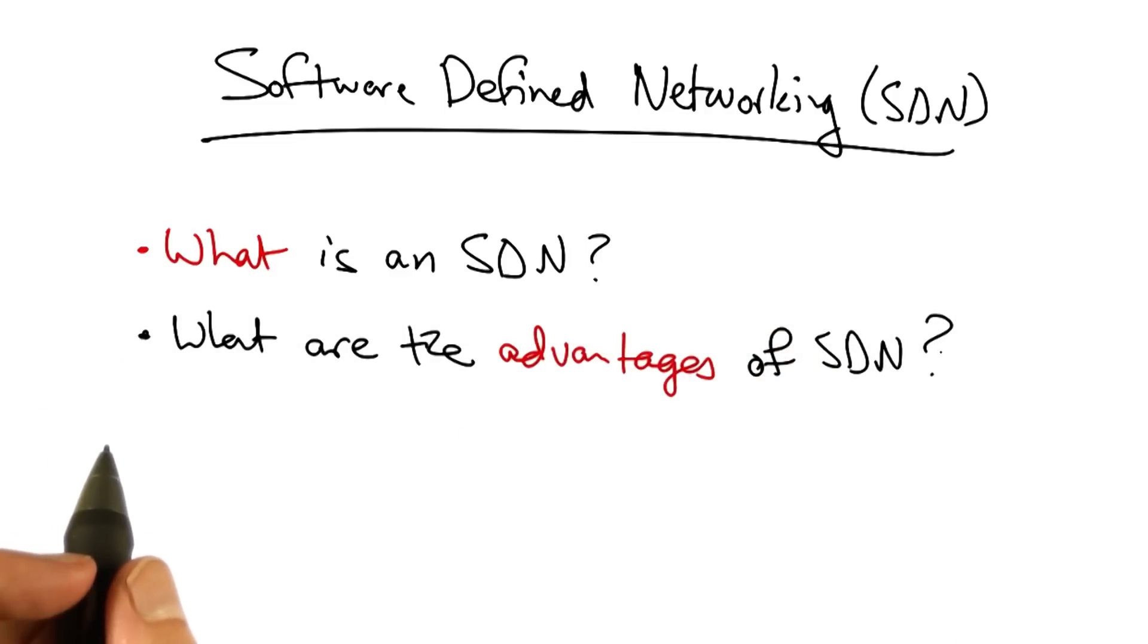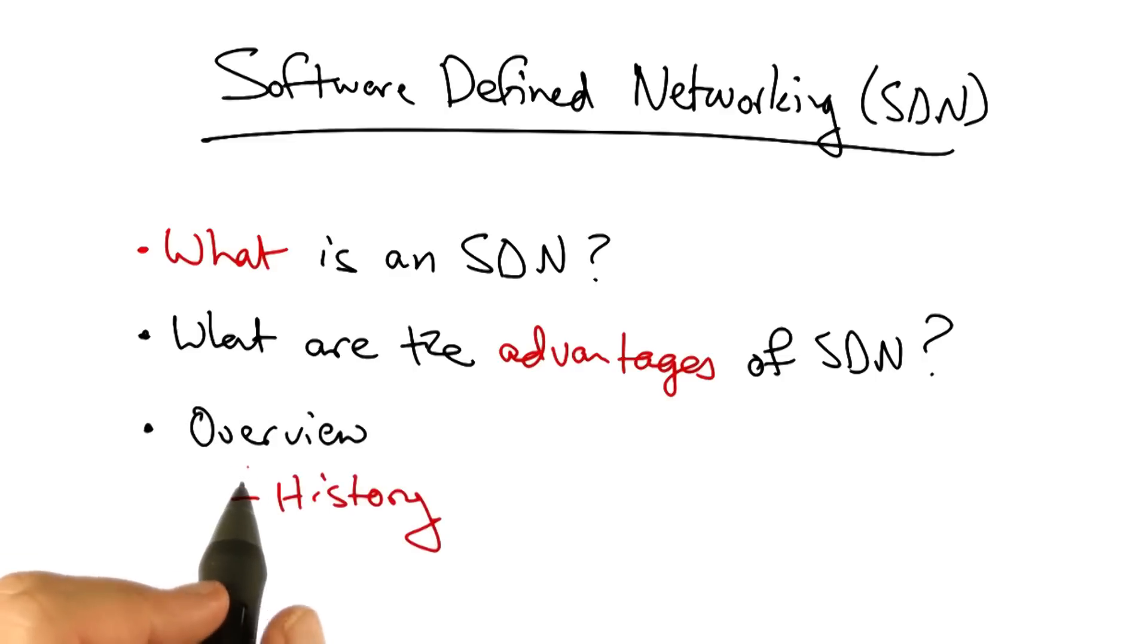Then we'll talk about what are the advantages of SDN over a conventional network architecture. We'll overview the history of SDN, the infrastructure that supports it, in particular how SDNs are designed and built, and the applications of SDN. Specifically, what they can be used for, and how they can be used to simplify various network management tasks.